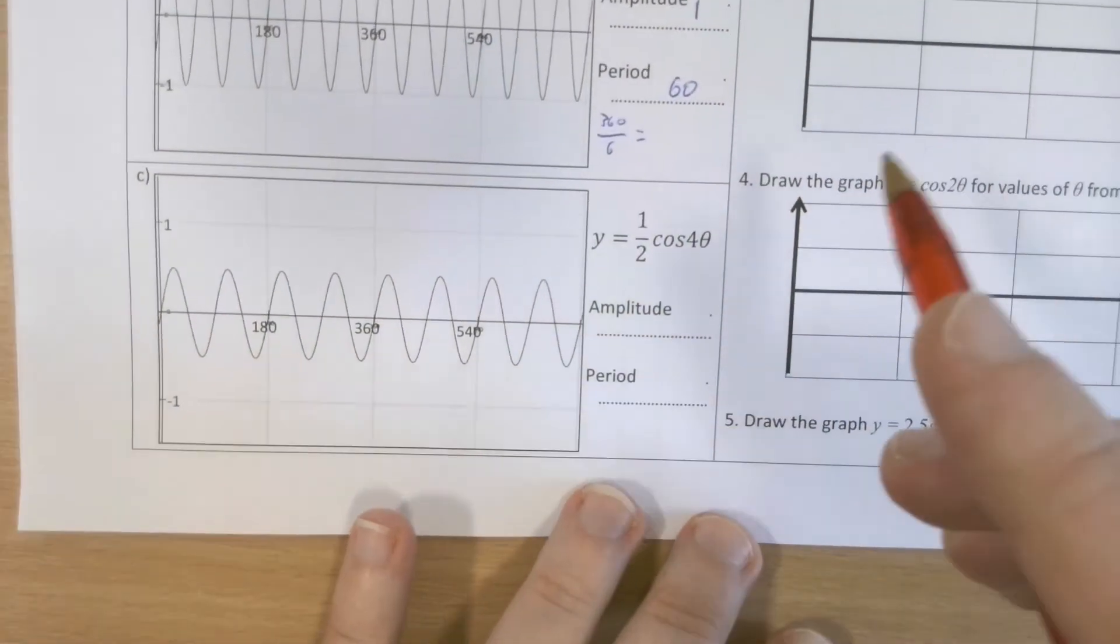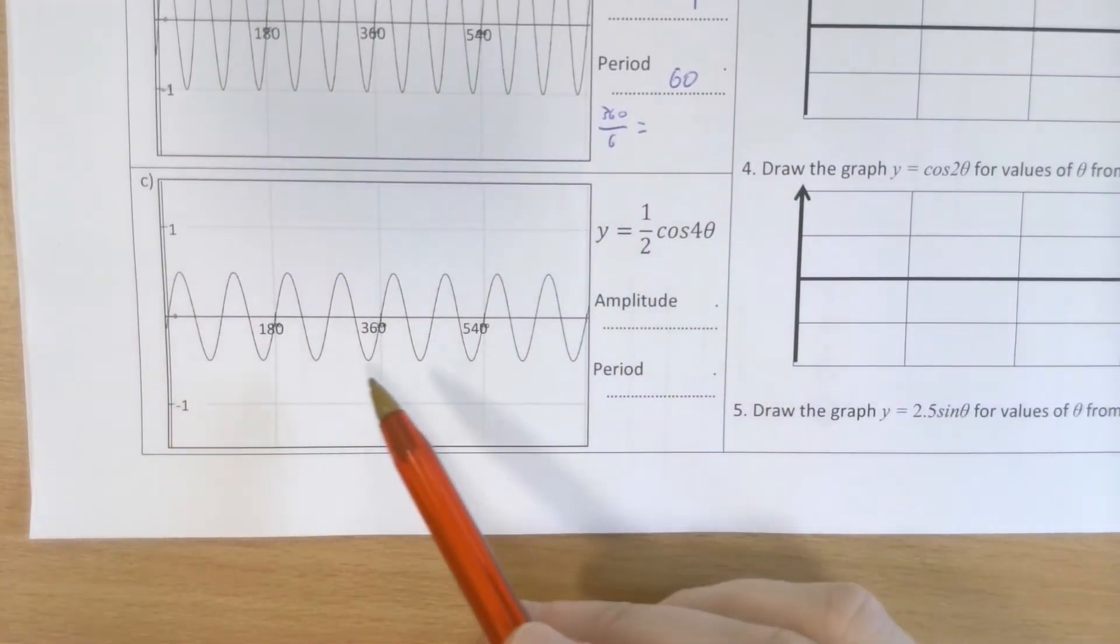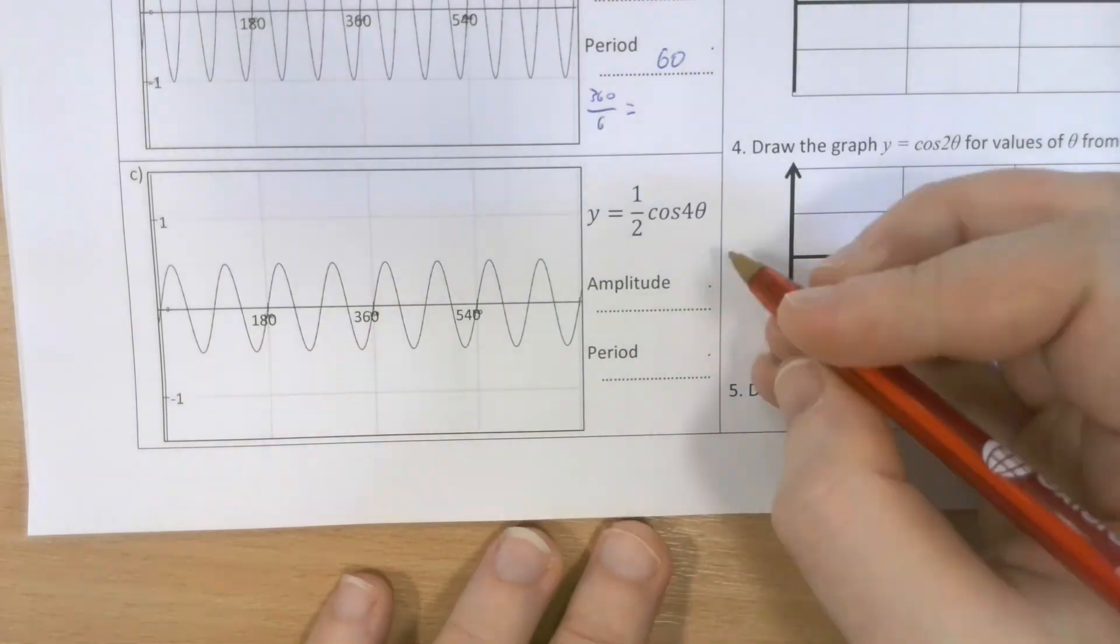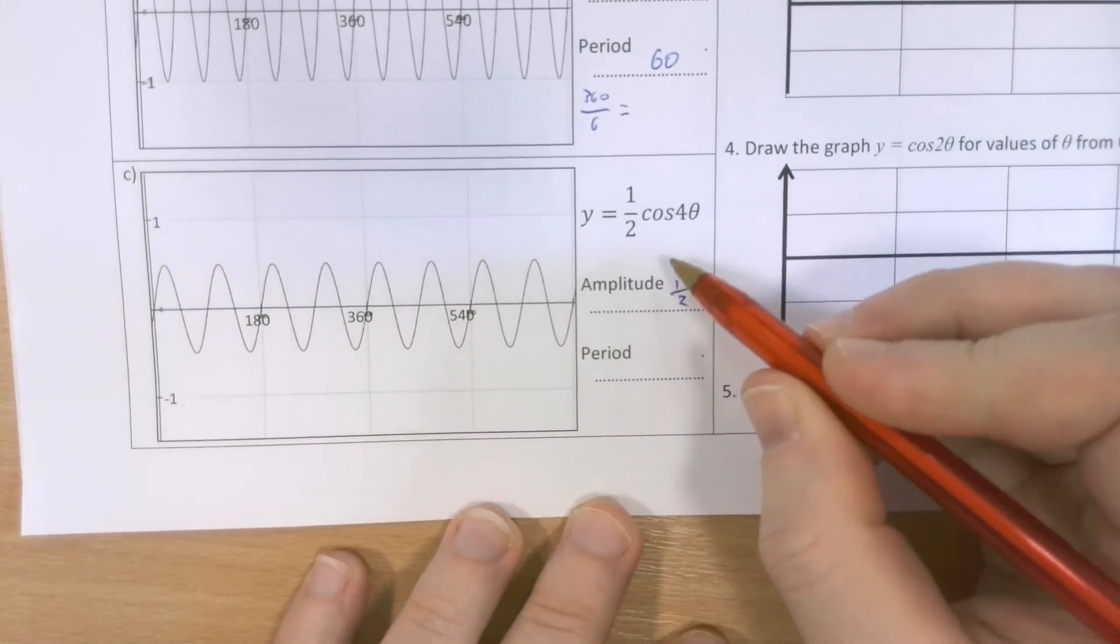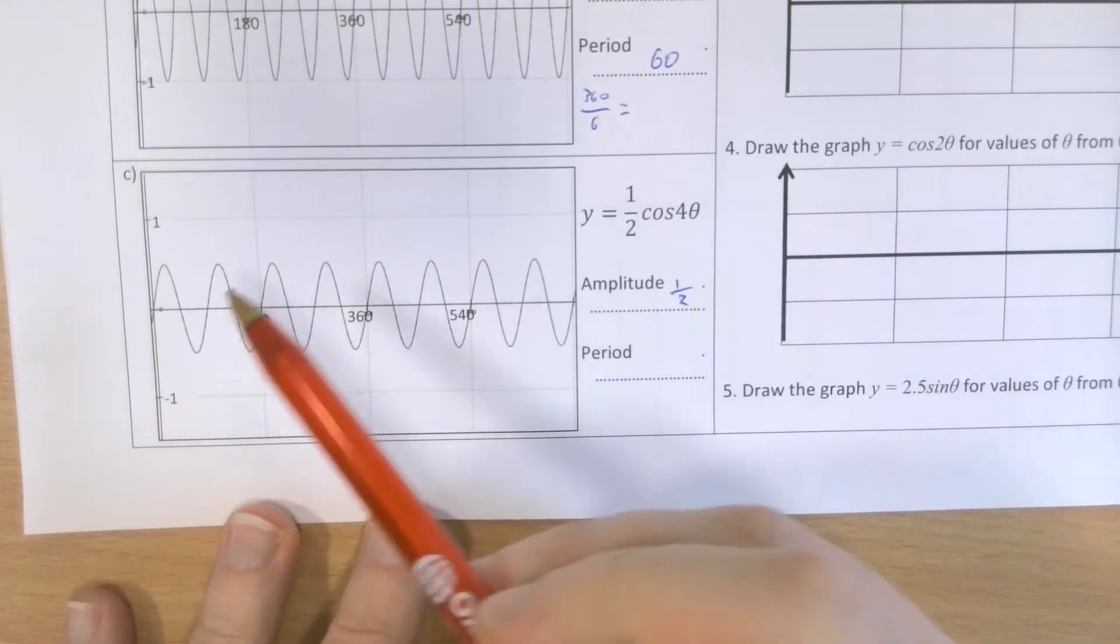If I move on to the next one, half cos 4θ, amplitude is halved because the entire thing is times by half, and then 4θ. Again, let's count. 1, 2,